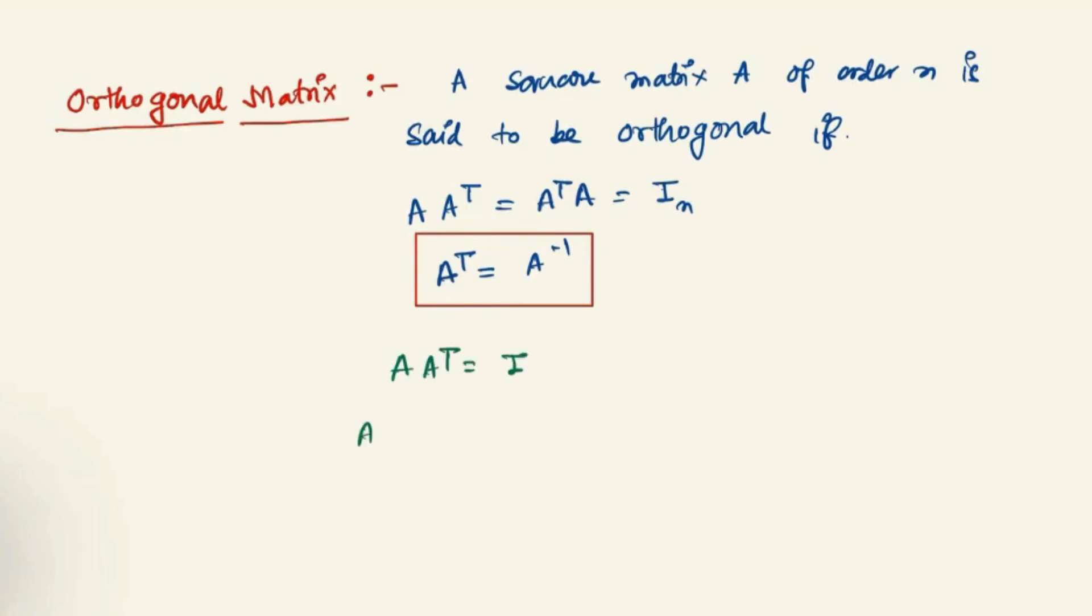A square matrix, A transpose equals A inverse times I, or A inverse is I, the identity matrix. Identity matrix multiplied into something will give you the same matrix. That is A transpose, and identity matrix multiplied with the inverse will give you the same matrix.